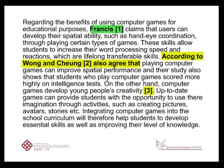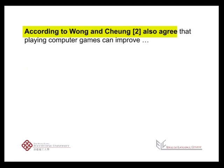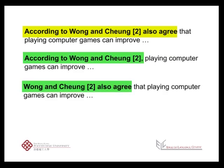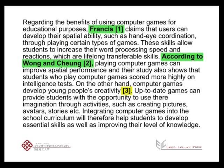Let's look at the next citation. Gigi wants to quote two authors, Wong and Cheung, using 'according to'. So far, so good. But then she adds the word 'also' in as well, which is wrong. She can either write 'according to Wong and Cheung [2]', or she can write 'Wong and Cheung [2] also agree'. Let's have a look at the last citation. It's non-integral, and the source is cited correctly — just the reference number in square brackets.